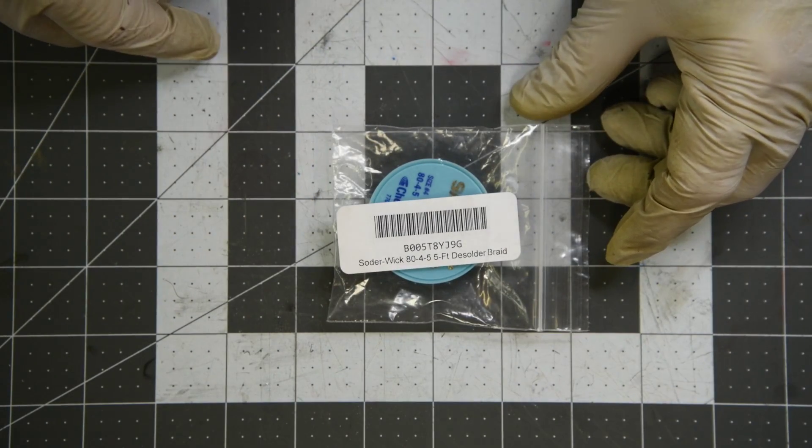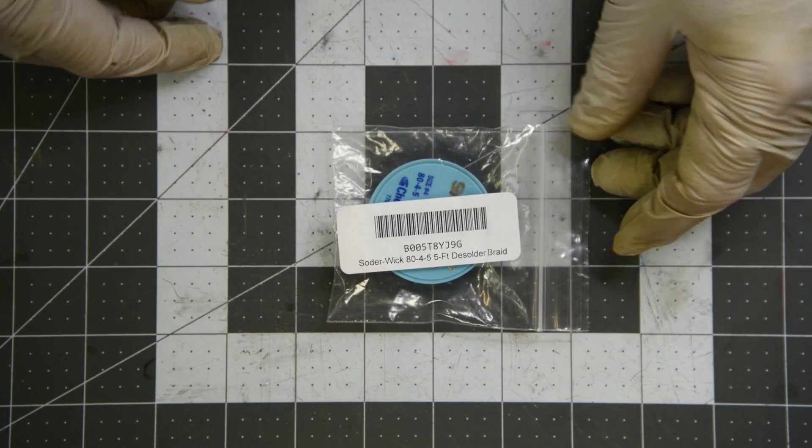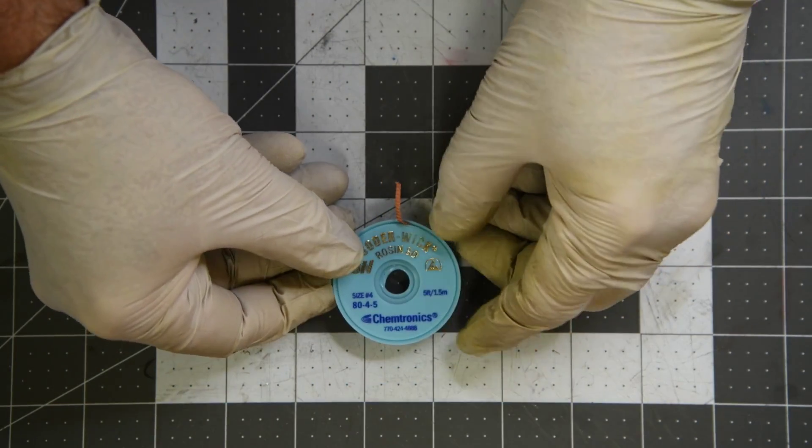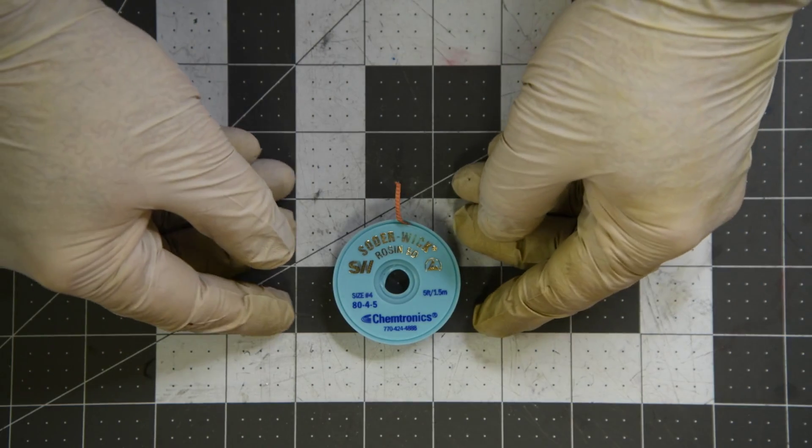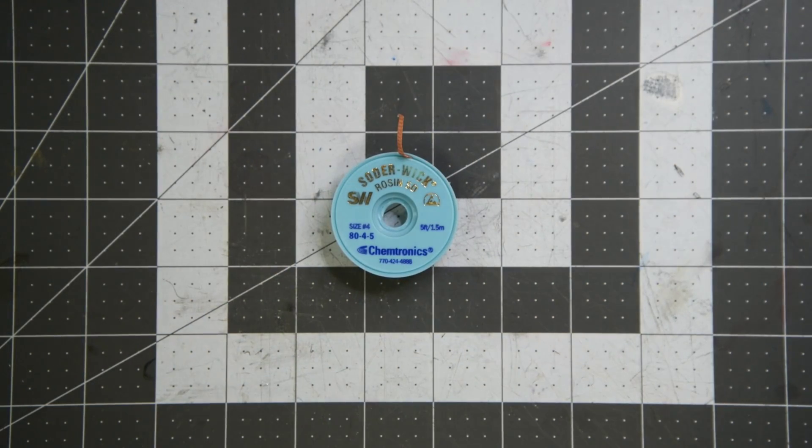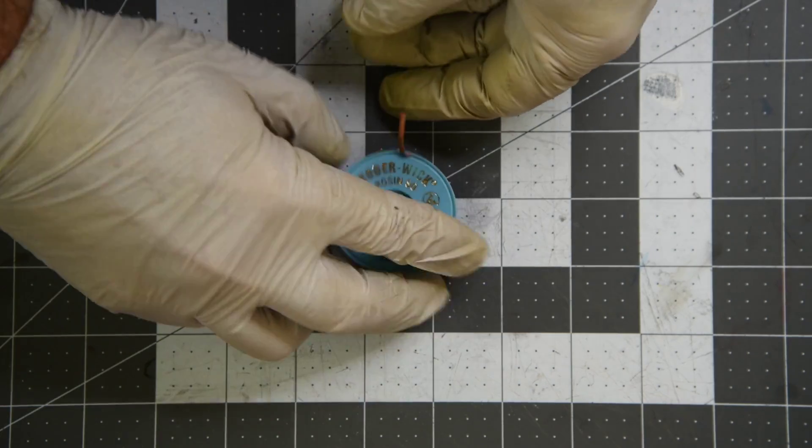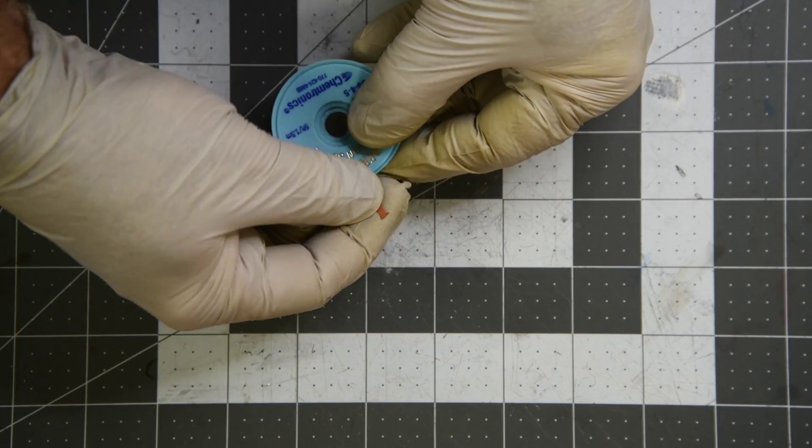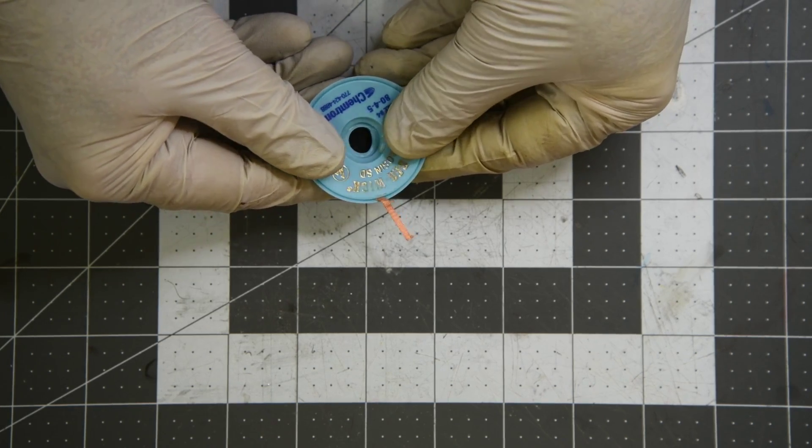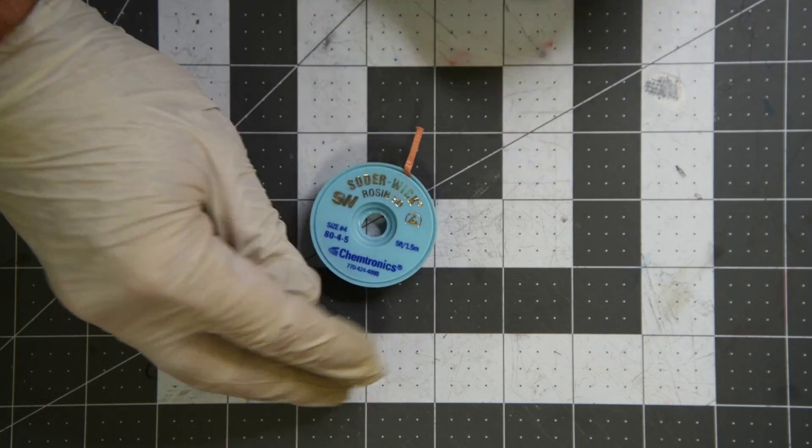Now the Chemtronics brand. It also is made in the U.S. This wick is .11 inches wide. And I've used this before, it's been a long time, but I remember it being quite good. This has a type R flux, so it should be the most active of all the solder wicks I've got here. This is a 5-foot spool at $2.15 a foot. I would normally not pay this much for solder wick, but I did want to have a quality reference to compare to.